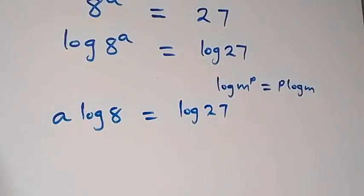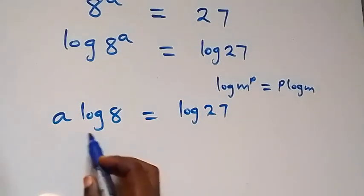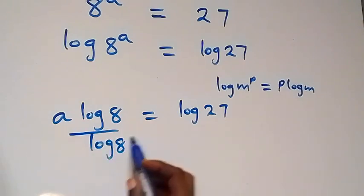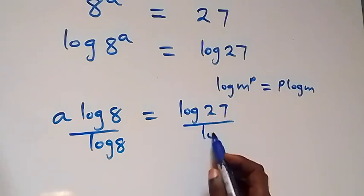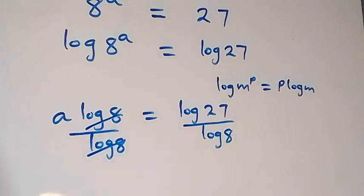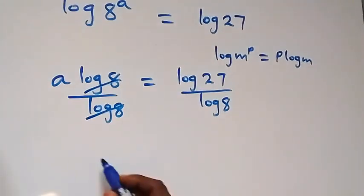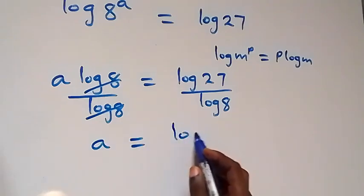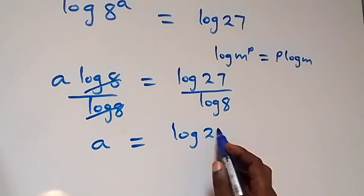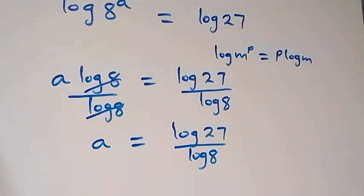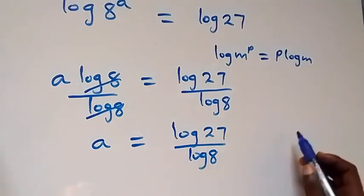The next step: from here we can divide both sides by log 8. This side also divides by log 8, then log 8 cancels, and we have a equals log 27 over log 8. From what we have here we can reduce this.